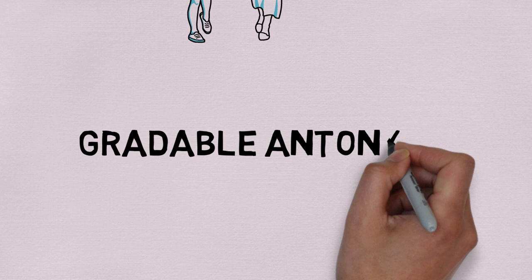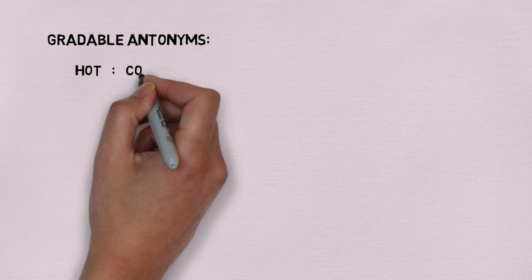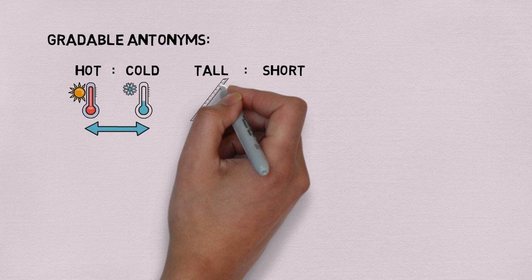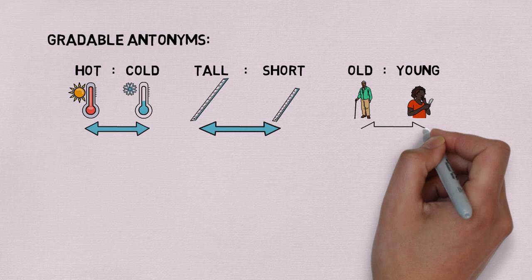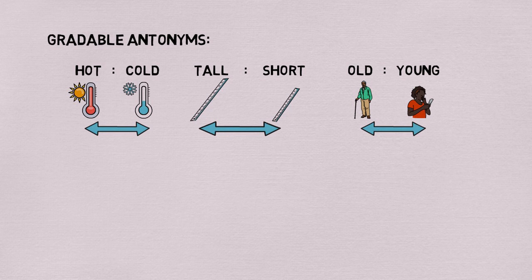The second type of antonyms are gradable antonyms, which exist on a scale. These are things like hot versus cold, tall versus short, or old versus young. These are scales with gray area in between, so something can be more hot or more cold. The absence of one means the presence of another — if someone is not tall, that means they are short; if something is not cold, that means it is hot; and if something is not old, that means they are young, or at least middle-aged.